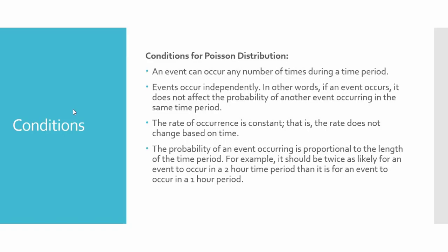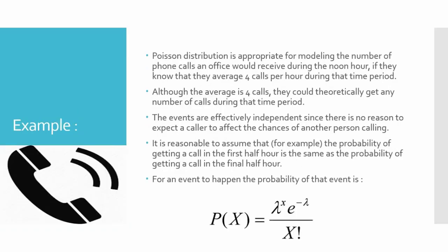So these are the few conditions that need to be met. Then let's see some examples of the Poisson distribution. Suppose you are in office and we want to model the number of phone calls you are getting. So let's say you have averaged the number of phone calls from your records.